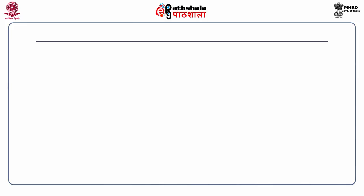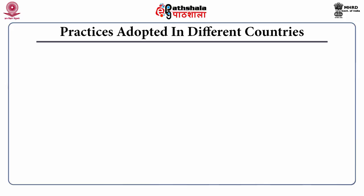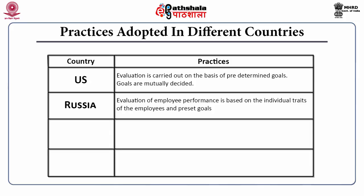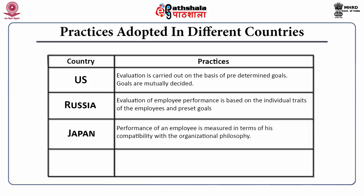These are some of the practices adopted in different countries in the context of performance management. In the US, evaluation is carried out on the basis of predetermined goals, and goals are mutually decided. In Russia, evaluation of employee performance is based on individual traits of employees and preset goals. In Japan, performance of an employee is measured in terms of his compatibility with the organizational philosophy. In the Middle East, performance appraisal is carried out as a controlling function in order to reprimand employees delivering poor performance.